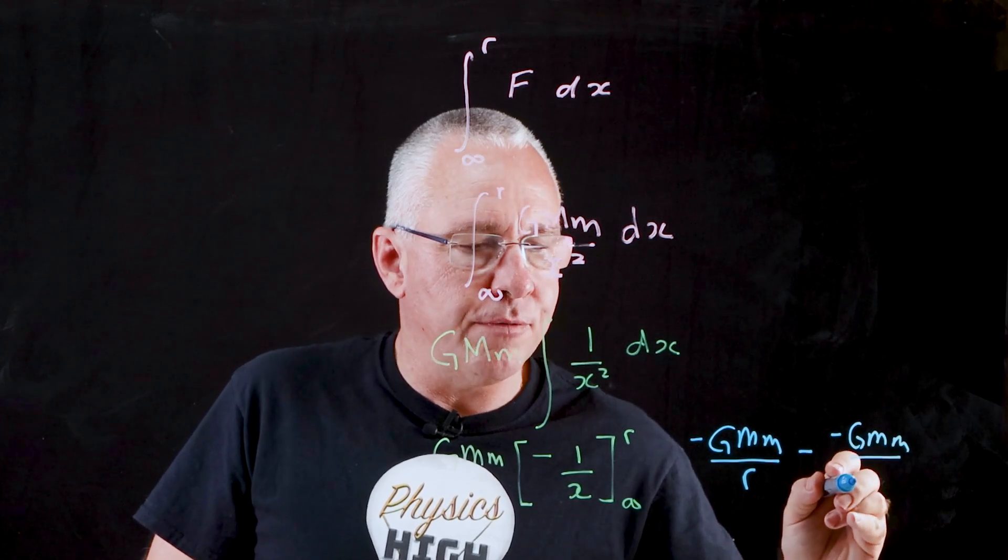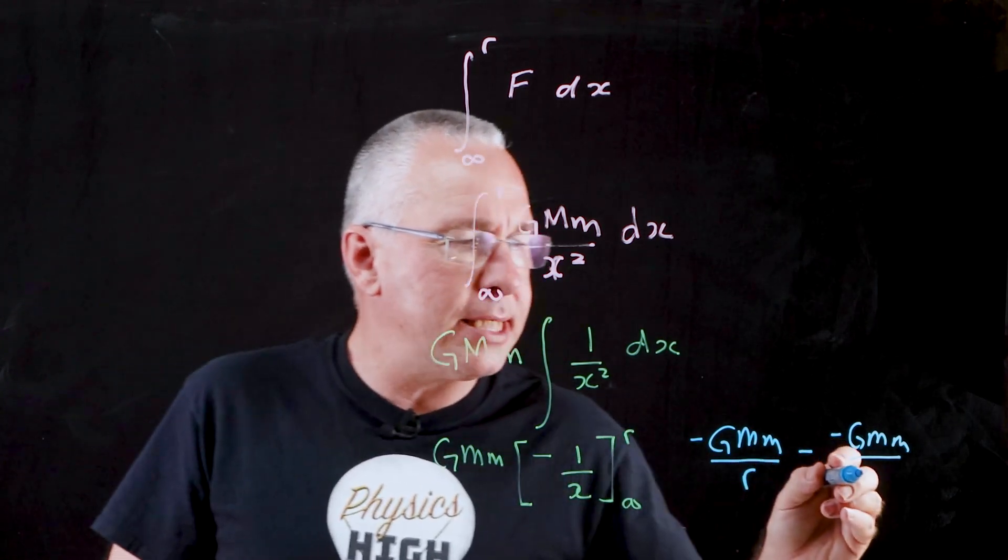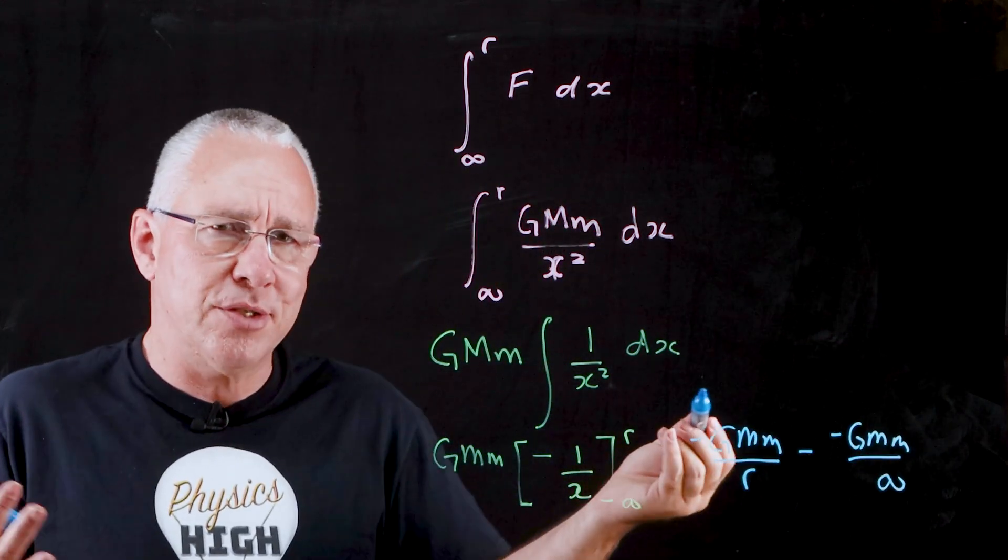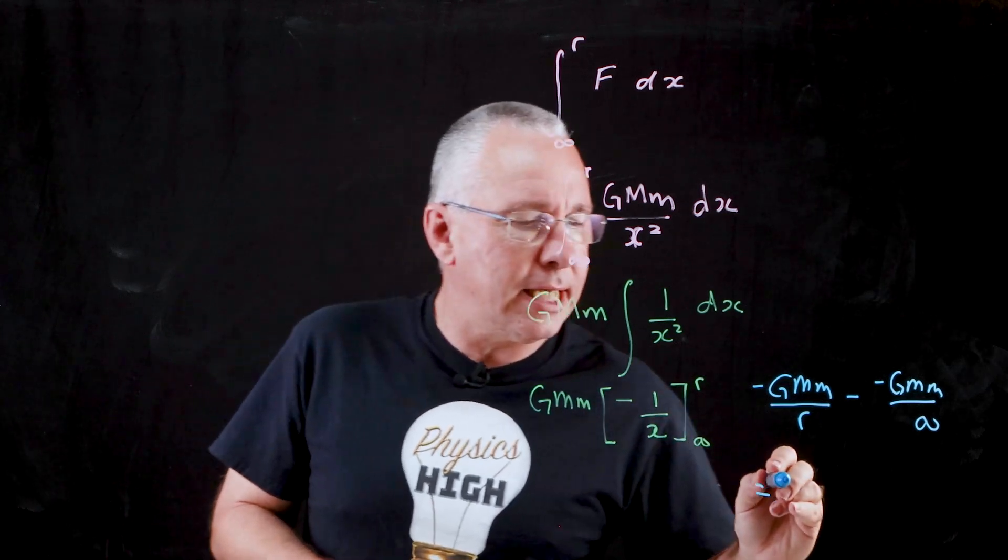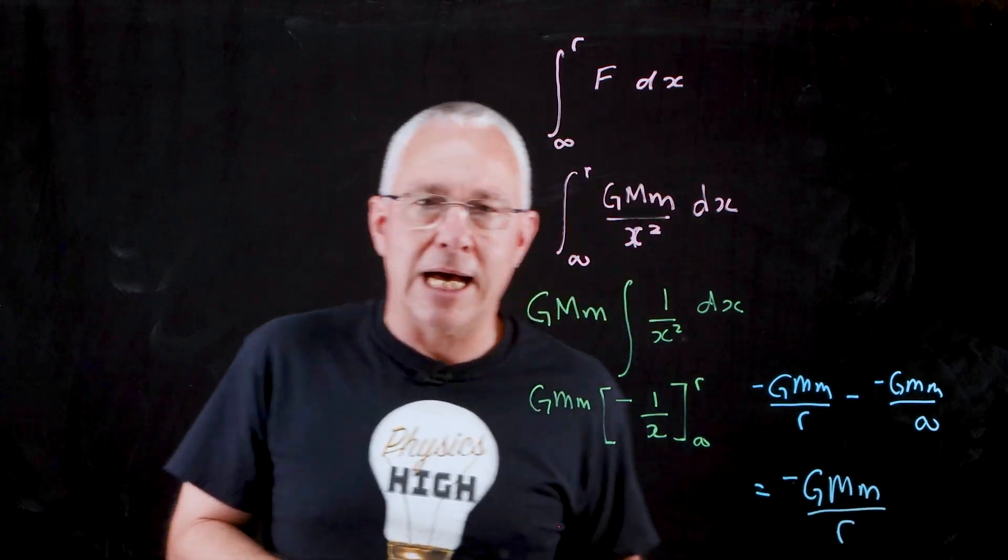This actually approaches zero. What we end up getting is simply negative GMm over r, and that is our potential energy.